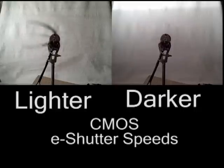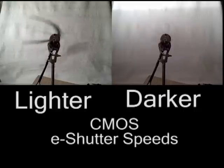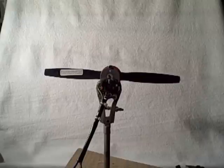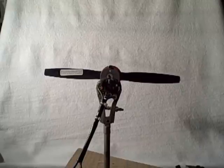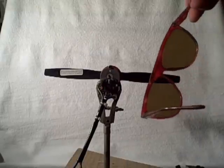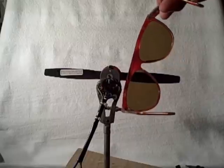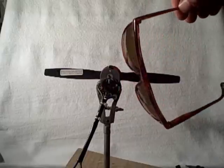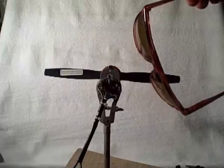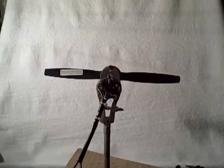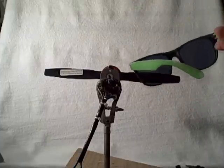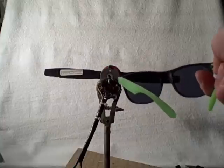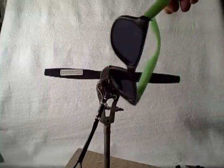If the camera being used does not allow for manual alterations in e-shutter speed, one can still reduce shutter speed using a filter which decreases the intensity of incident light. Here, pairs of sunglasses are being used to demonstrate. Naturally, it would be best to use filters that do not alter colors, necessitating color correction.